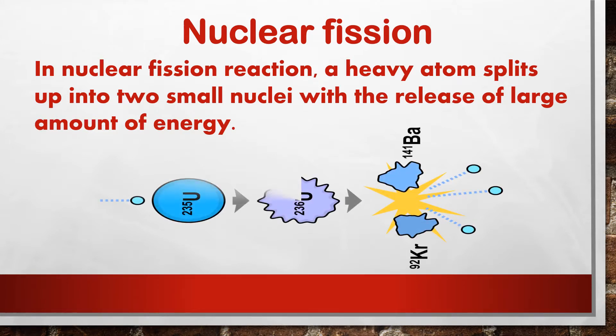Let's see one of the simplest examples for nuclear fission reaction. Here a neutron is bombarded with uranium — one of the isotopes of uranium, U-235. Uranium is a natural unstable radioactive element. Whenever this uranium absorbs a slow-moving neutron, it comes into an excited state, which is a momentary and temporary stage. After that, the uranium splits into two small particles: krypton and barium.